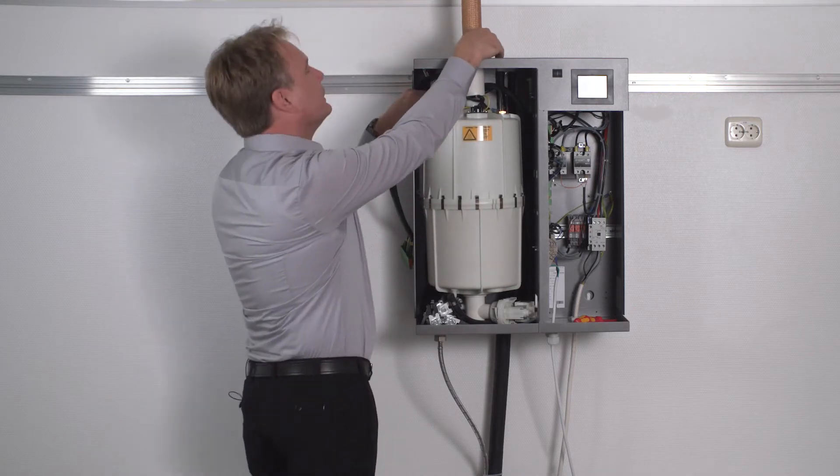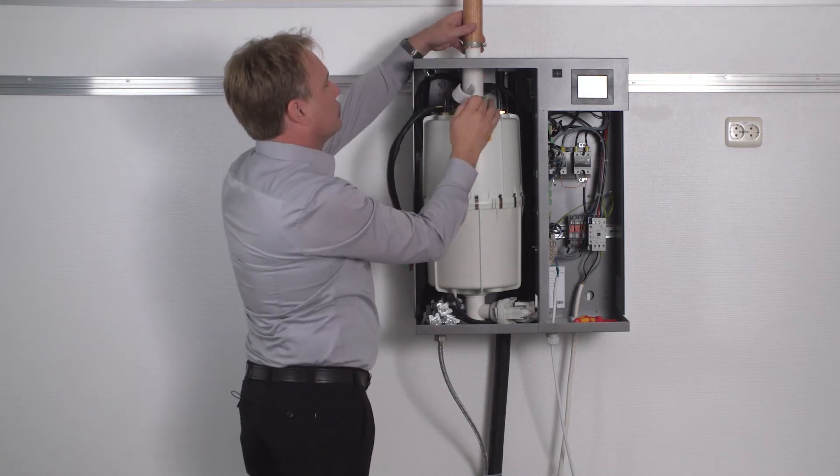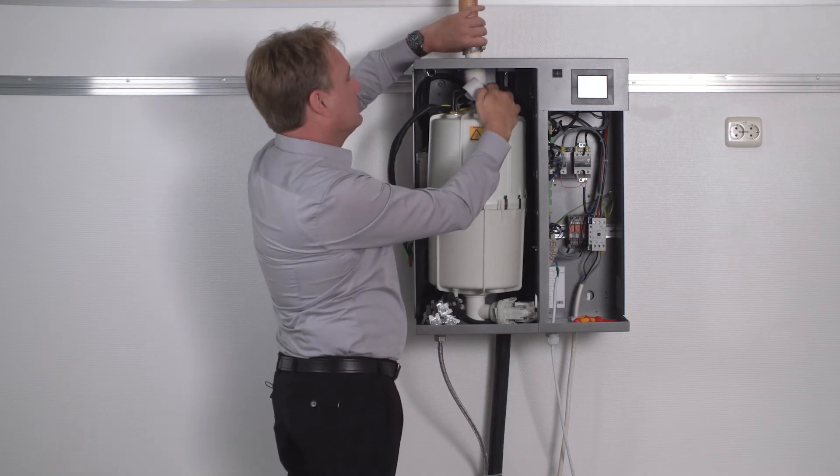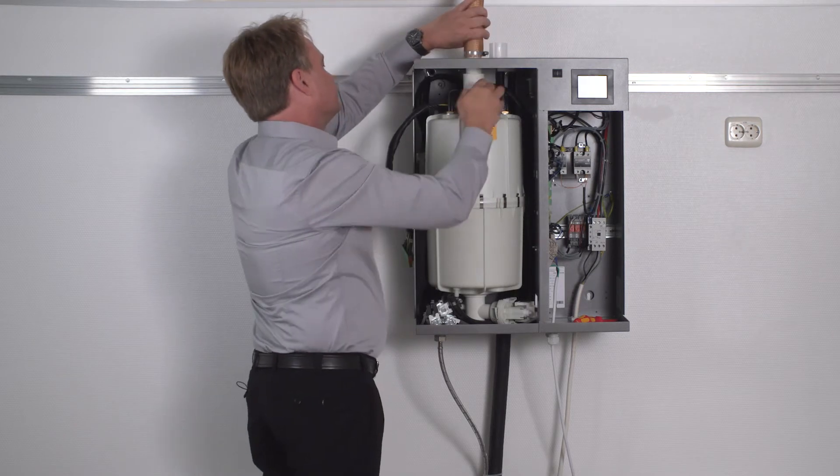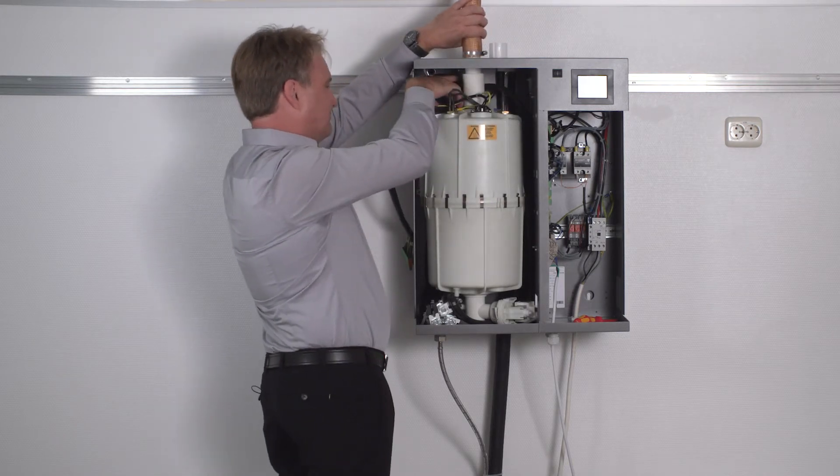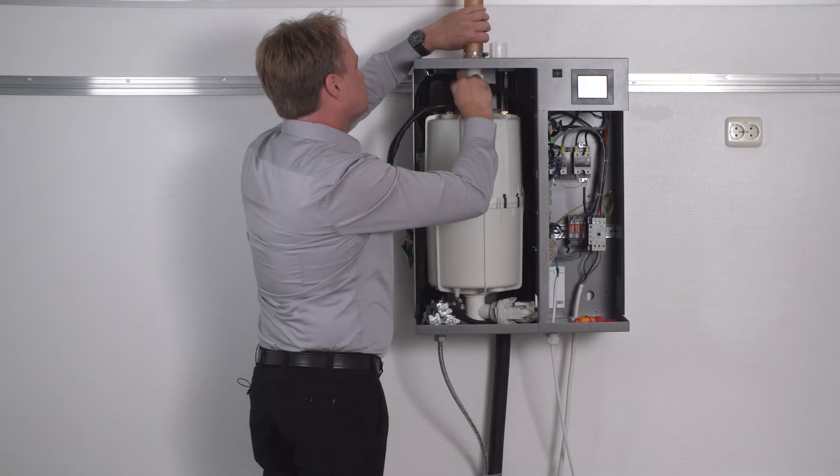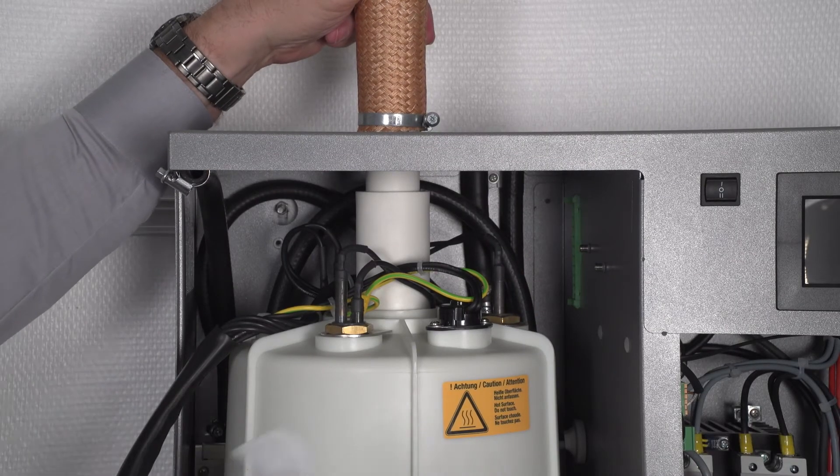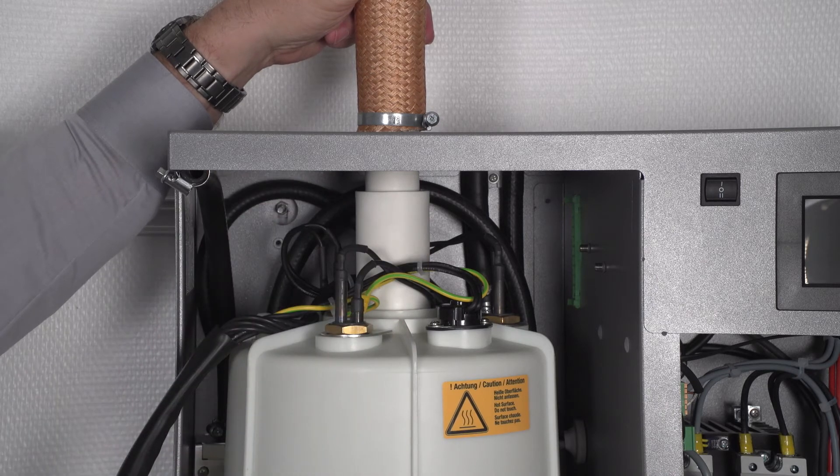Then I remove the clip and then press the steam hose adapter with the steam hose onto the steam cylinder. Finally, I re-secure the steam hose adapter with the clip.